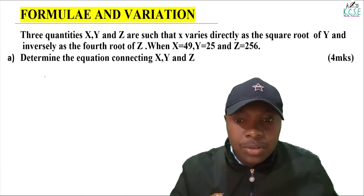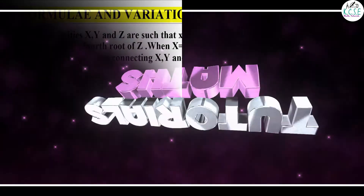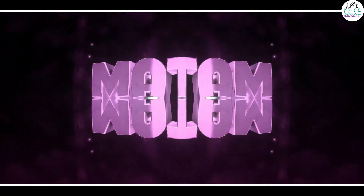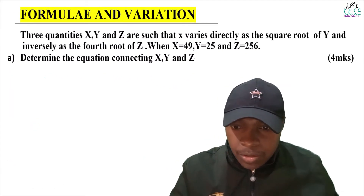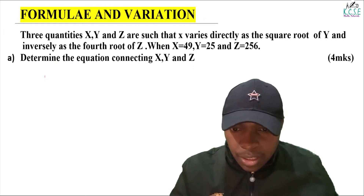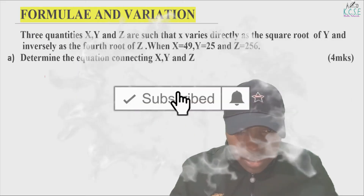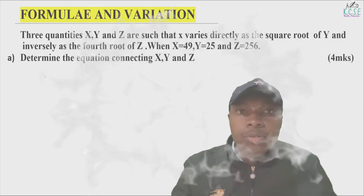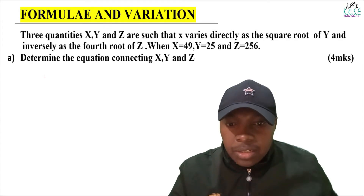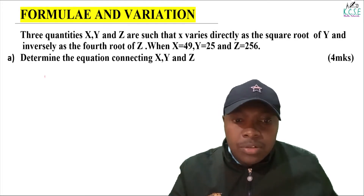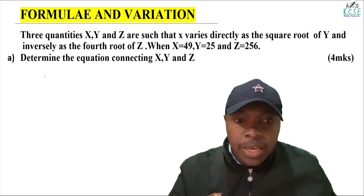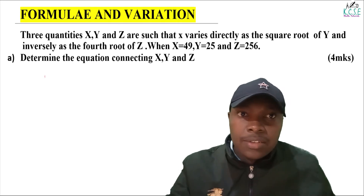Welcome. Let us work on this question on formula and variation. It reads: three quantities x, y and z are such that x varies directly as the square root of y and inversely as the fourth root of z. When x equals 49, y equals 25 and z equals 256.